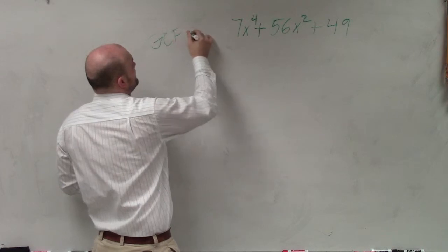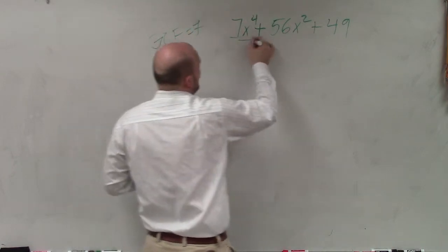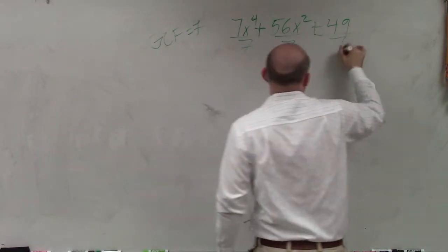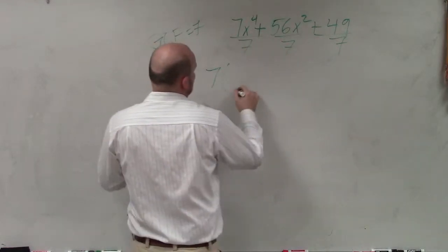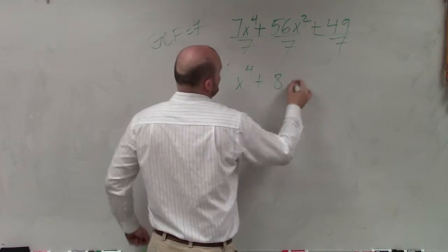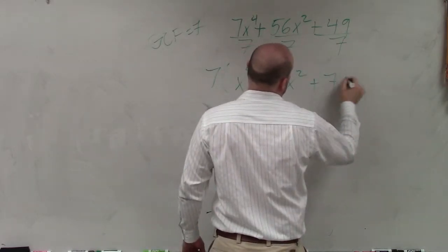So I can say my GCF is equal to 7. So if I divide every term by 7, I'm not going to show it the box way, but it's the same thing. I can have 7 times x to the fourth plus 8x squared plus 7.